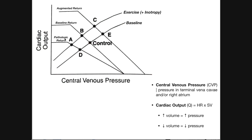This bottom line represents pathologic venous return — something has been done to harm venous return. One example would be dehydration or fluid loss of some kind. If there's less fluid in your circulatory system, there's going to be less venous return. You have the same size circulatory system, so if there's less blood, it distributes equally, meaning less blood is returning back to the right atrium at any given time.